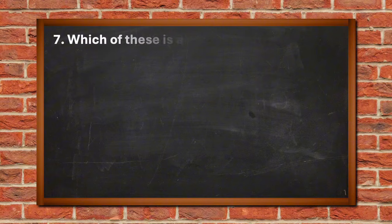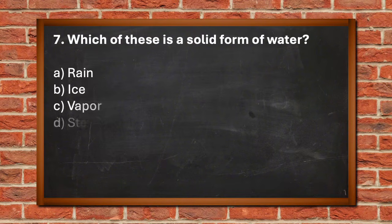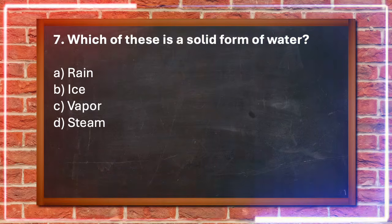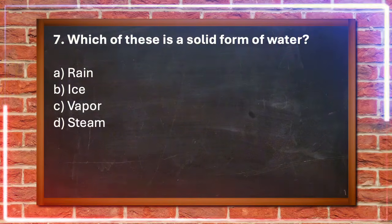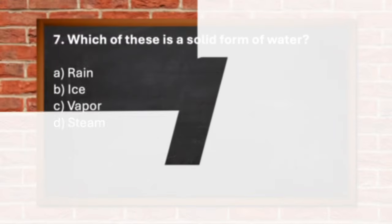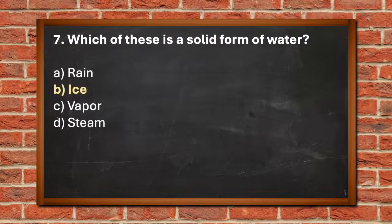Number 7. Which of these is a solid form of water? A. Rain, B. Ice, C. Vapor, D. Steam. The answer is B. Ice.